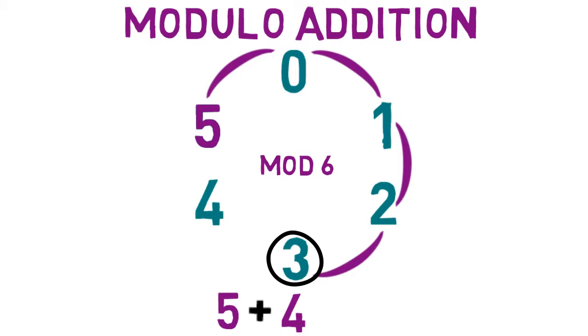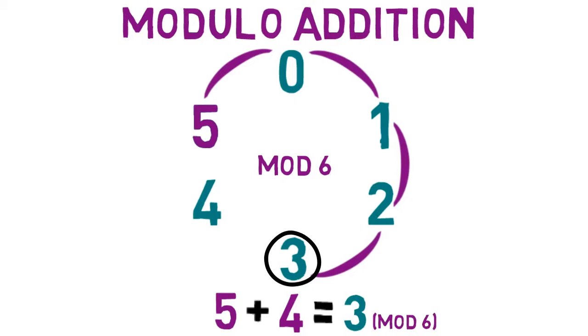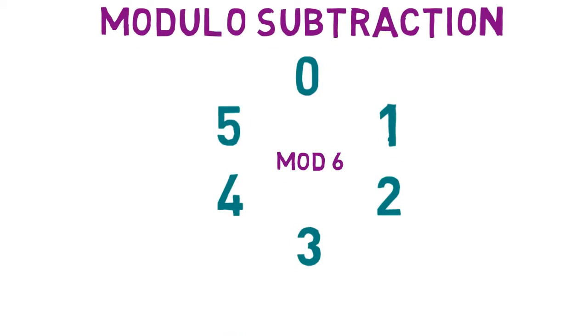For example, 5 plus 4 equals 3 in modulo 6. In a similar way, you can perform modulo subtraction by counting numbers counterclockwise.